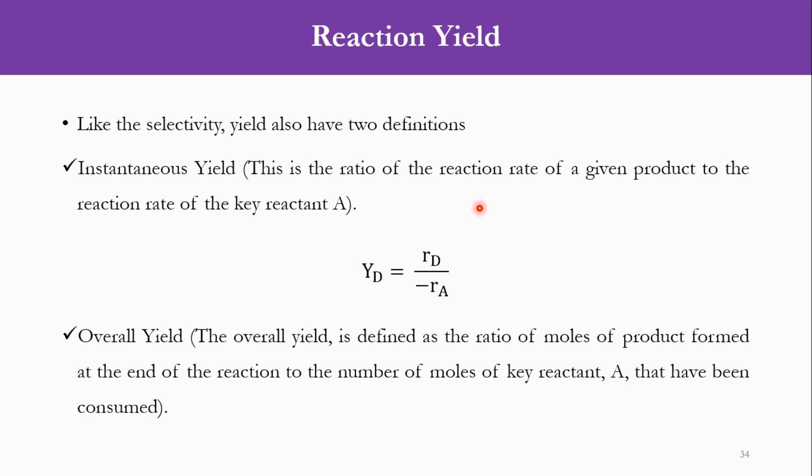So in case of yield, it will be the product divided by the reactant. While in case of selectivity, it will be the product to another product, means desired product to undesired product.